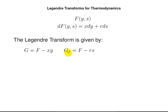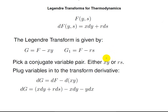Or alternatively, we could have some function g1, which is our function f, minus the other conjugate pair, rs. So what we do is we pick a conjugate variable pair, either xy or rs. I'm going to pick xy.